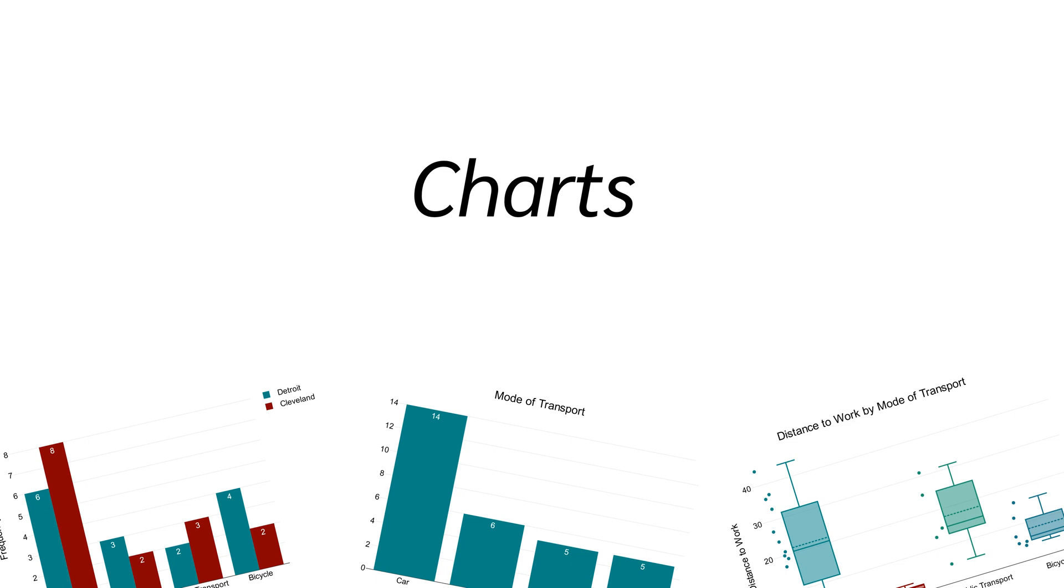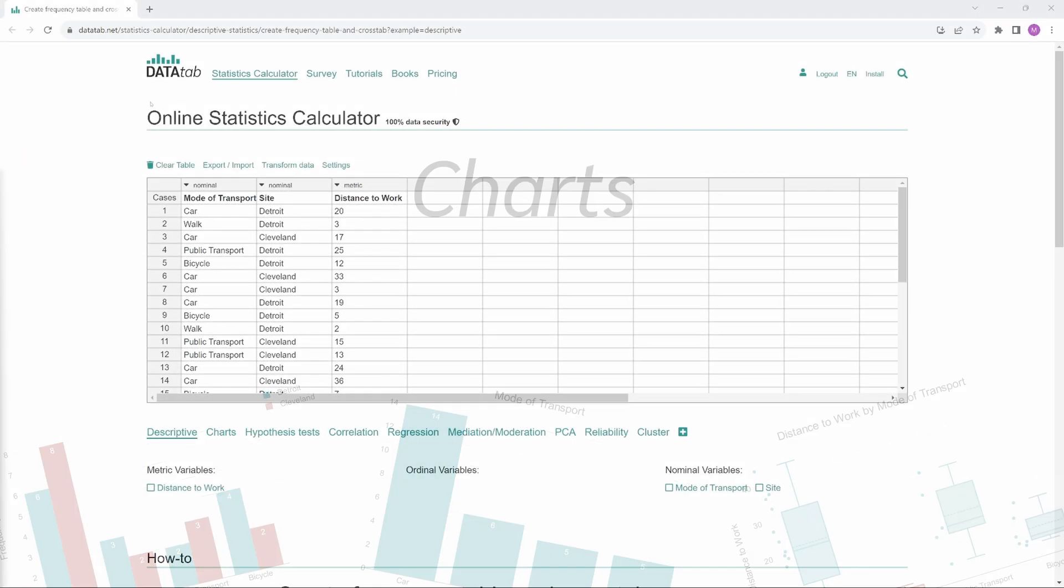Let's take a look at the most important ones. To do this, let's simply use datadep.net. If you like, you can load this sample data set with the link in the video description. Or you just copy your own data into this table.